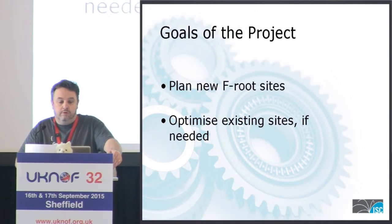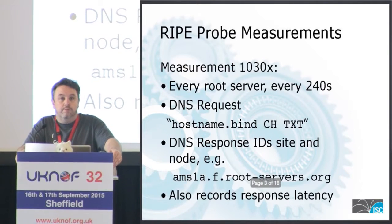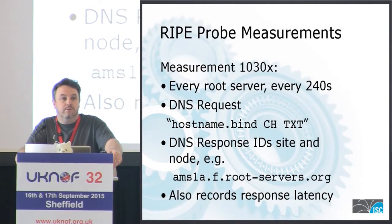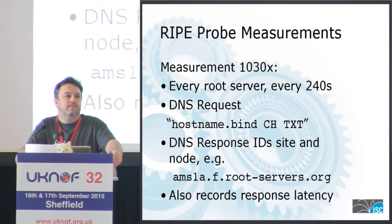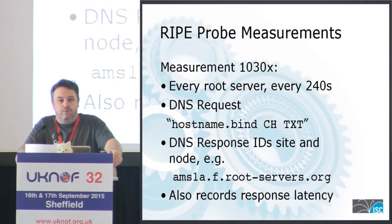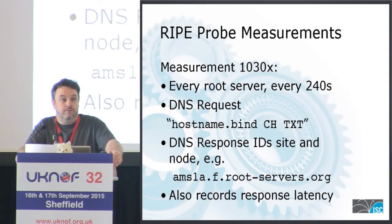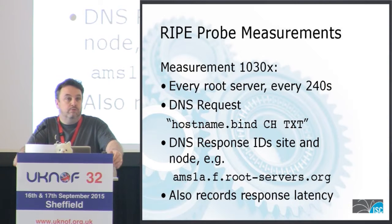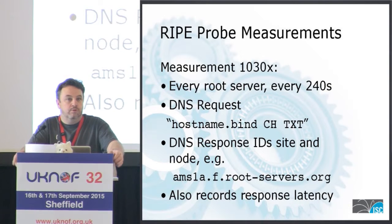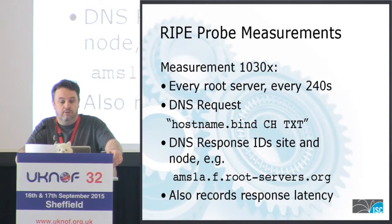To do this, I started looking at the measurements that are made by the RIPE Atlas probes that many of you have. A nice thing about the RIPE Atlas probes for us as a root operator is that every RIPE Atlas probe actually automatically makes measurements of every one of the root server systems. They do a measurement every four minutes, and they go and ask for the standard hostname.bind chaos query.